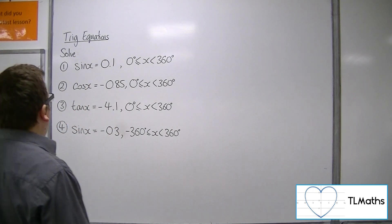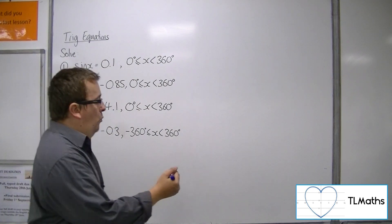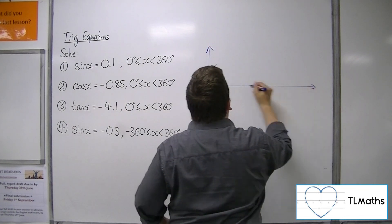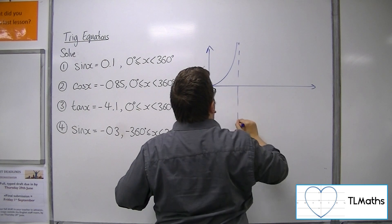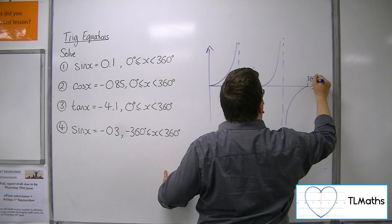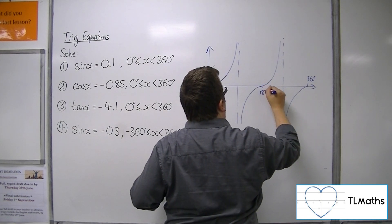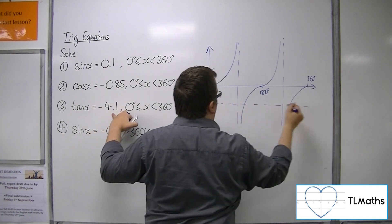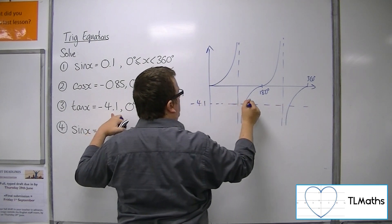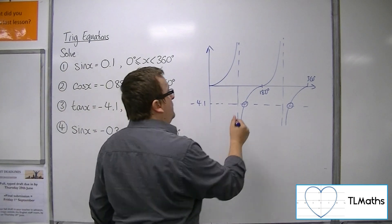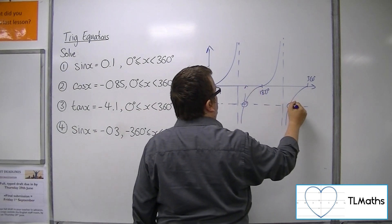Now number 3, tan x is minus 4.1. So a sketch of tan. There's 360, there's 180. Now minus 4.1, somewhere down there. Now there are two solutions that we can see between 0 and 360.